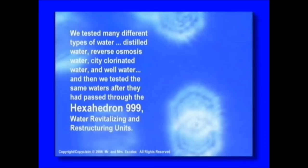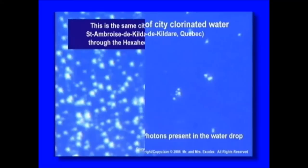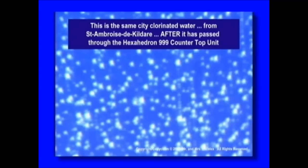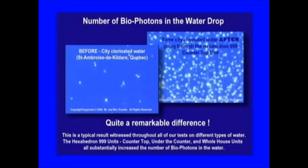We tested many different types of water - distilled water, reverse osmosis water, city chlorinated water, and well water - and then we tested the same waters after they had gone through the Hexagon 999 water revitalizing and restructuring unit. This is a sample of city chlorinated water taken from Saint-Ambroise-du-Kildare, Quebec. Notice the number of biophotons present in the water drop. After passing through the Hexagon 999 countertop unit, there are hundreds of hexagonally shaped biophotons. Each of these biophotons contributes to the level of structural organization of the water.